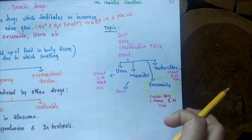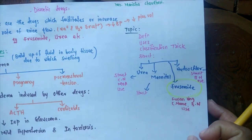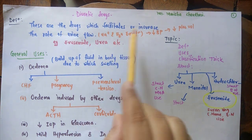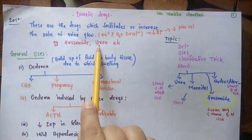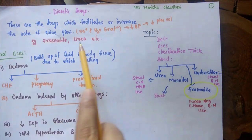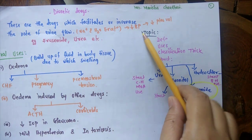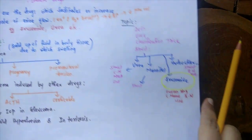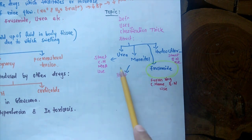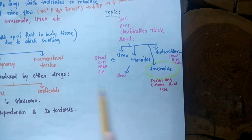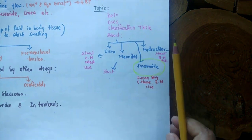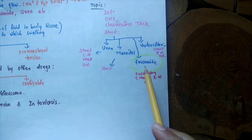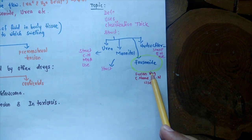Before that, we will briefly revise the diuretic drug definition and the classes. The definition of diuretic drugs states that these are the drugs which facilitate or increase the rate of urine flow and sodium excretion, and in turn decrease blood pressure due to a decrease in blood volume. Examples include furosemide and urea. Important diuretics include urea and mannitol, which work by osmosis and belong to osmotic diuretics, then furosemide, which belongs to the very potent or high ceiling diuretics, also known as loop diuretics.